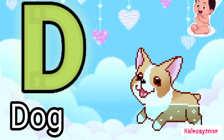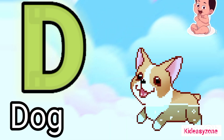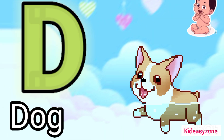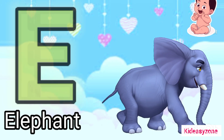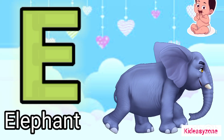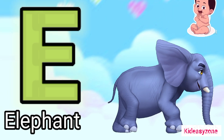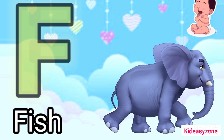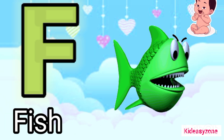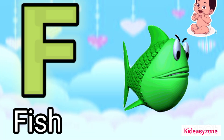D is for dog. E is for elephant. F is for fish.